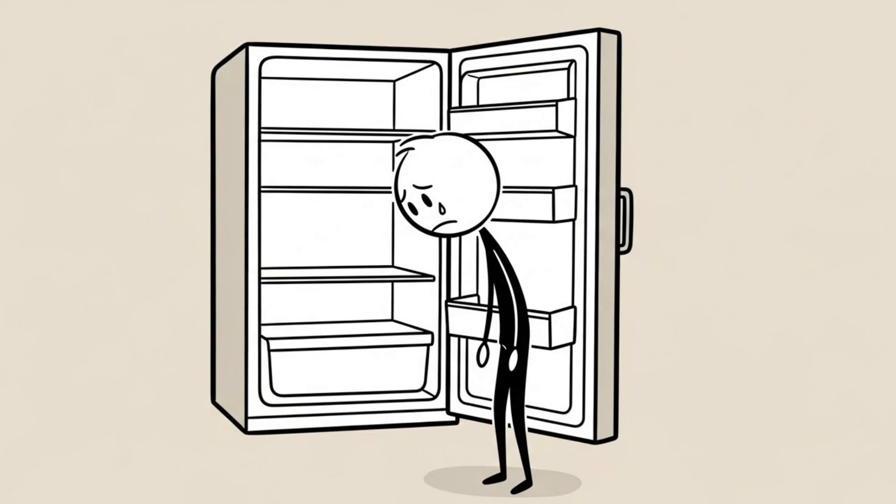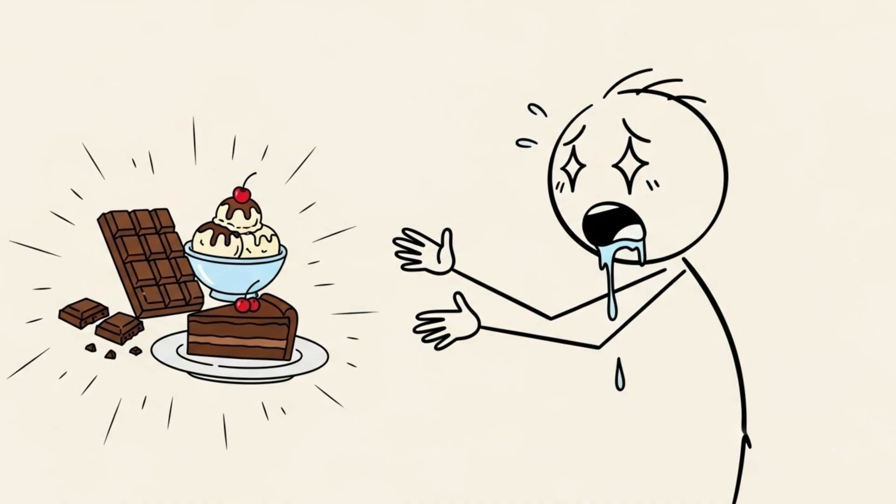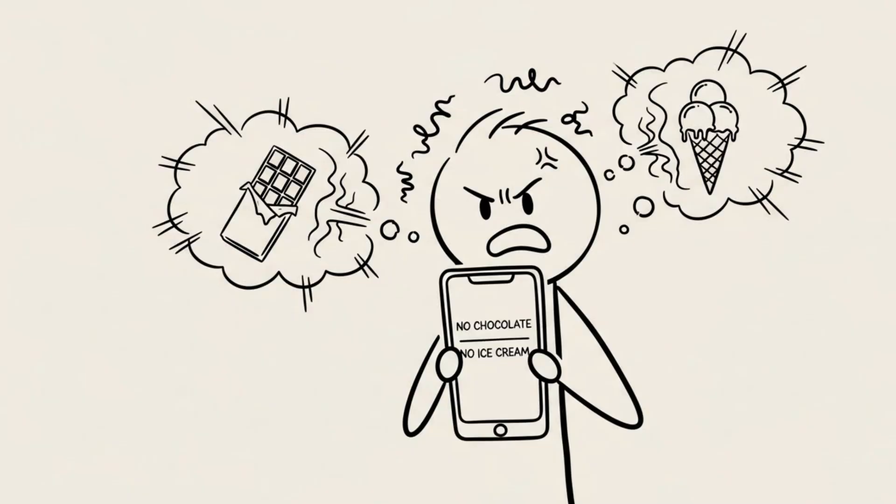Anxiety, again, raises cortisol. Plus, the restriction created a scarcity mindset. Because I had a limit, I wanted the forbidden foods even more. I would crave chocolate and ice cream constantly because my app said I couldn't have them.